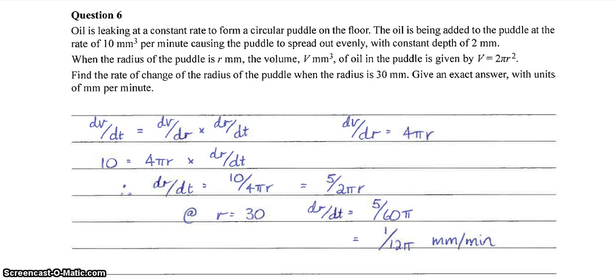Okay. Question 6. Here we have a related rates question. So the easiest way to do this, we're talking about volume, we're talking about radius, and we're talking about time. So I always like to start by writing dv dt is equal to dv dr times dr dt.